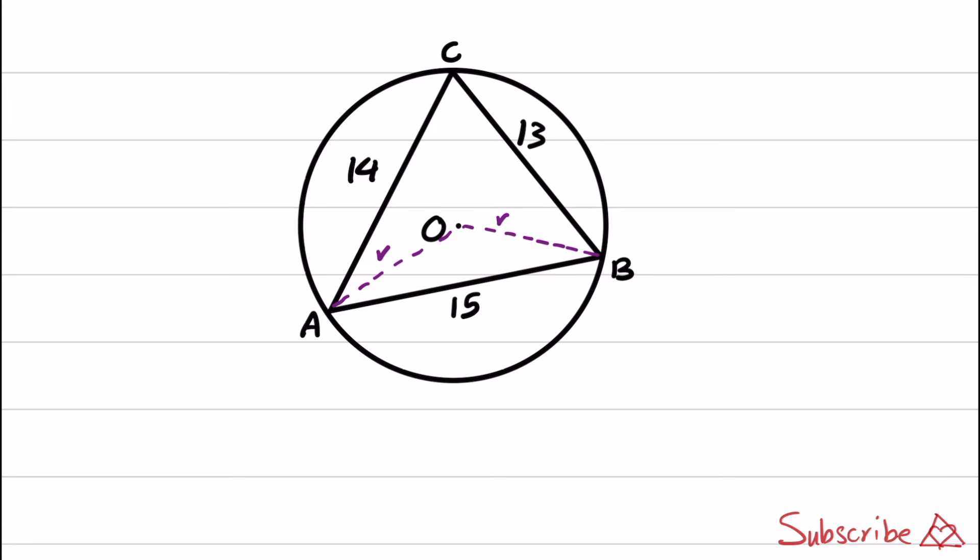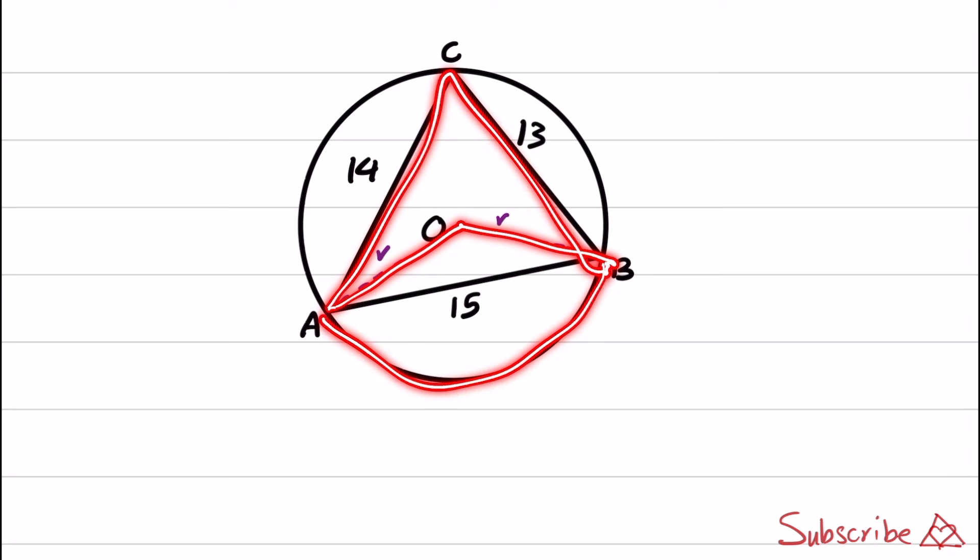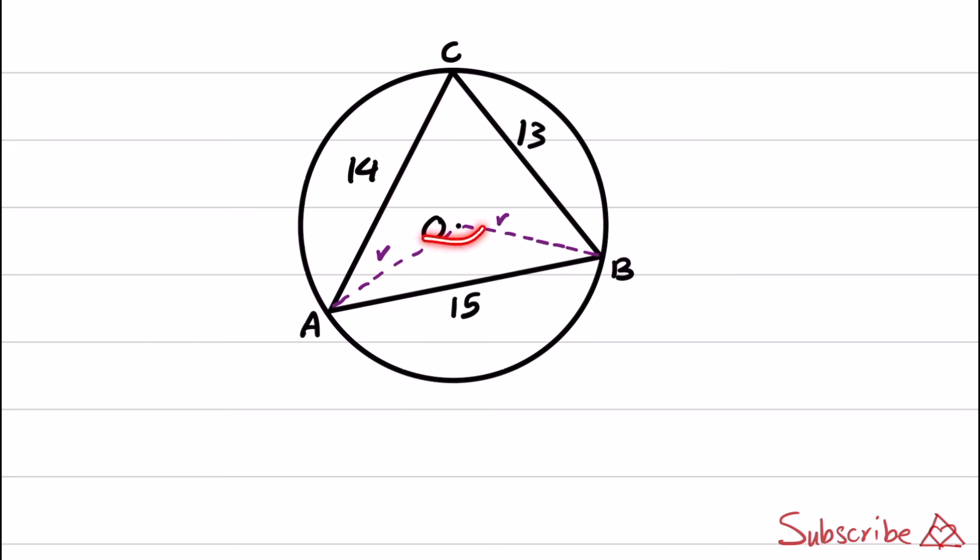One hint that I'm going to use is that angle AOB is a central angle and ACB is an inscribed angle and they both share the same intercepted arc. In this situation, the central angle is two times the inscribed angle. So if the inscribed angle is theta, the angle AOB is basically two times theta.